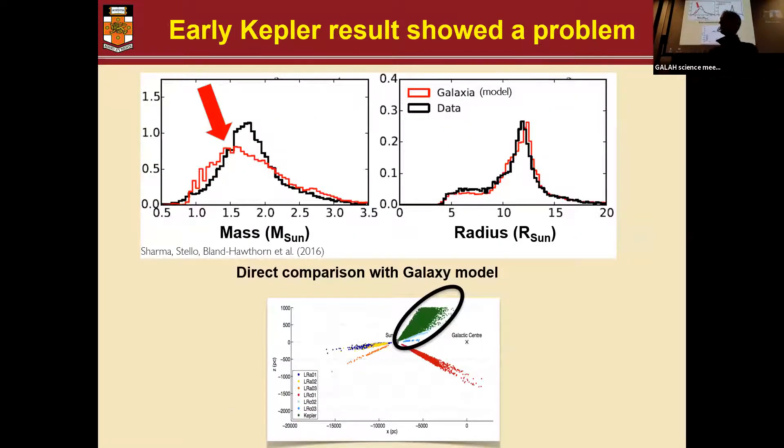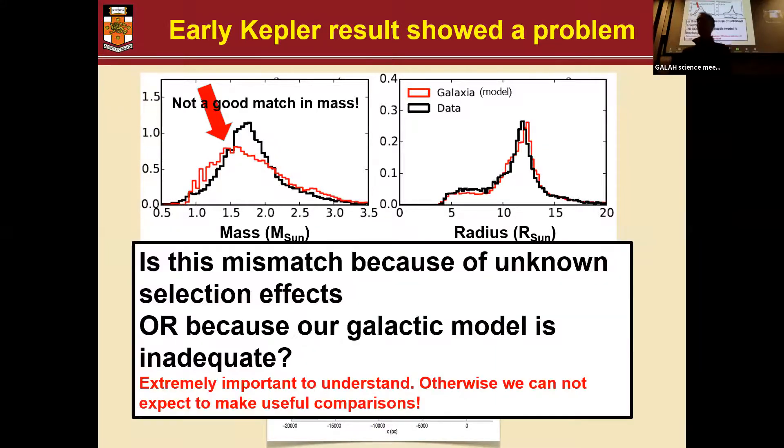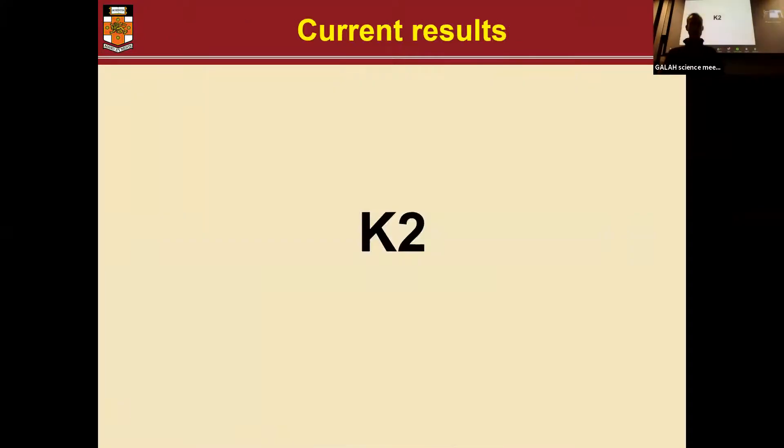Now, we did that very early on, but those previous missions like Kepler weren't designed for that. And so we found some discrepancies between our simulation in red and the data in black, in particular for mass. But we weren't quite sure why we saw the difference. That was because we weren't quite sure what the selection function of the data was. And so we couldn't say whether it was a problem with the data or a problem with the model. And so luckily, along came K2.